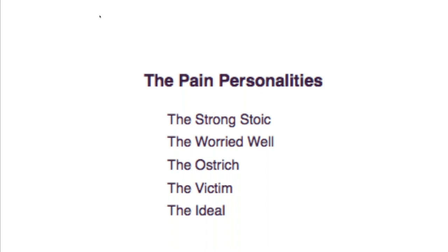The fifth pain personality is the ideal — the patient who doesn't come in too early and doesn't come in too late; they seem really well attuned to their body. The reason these pain personalities are so important is that once you know your own pain personality, you can adjust your behaviors so that you behave more like the ideal. Like in badminton, if you know your serve tends to list to the right, you can make adjustments so that your serve goes where you want it to go.